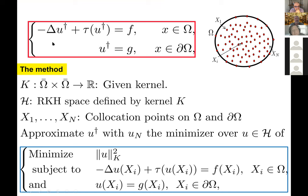Given a kernel K defined on the domain Omega, the proposed approach is to approximate the solution u-dagger of the PDE with a function u minimizing the following nonlinear optimal recovery problem, where the quantity to be minimized is the RKHS norm of u defined by kernel K, and the constraints require u to satisfy the PDE at a finite number of collocation points in the interior of the domain and on the boundary.